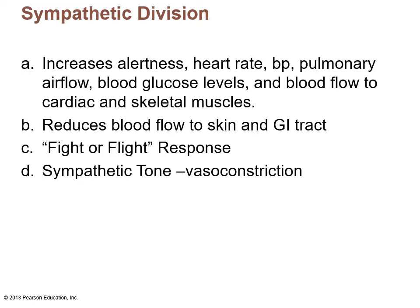The sympathetic division I like to call the E system, because E stands for excitement, emergency, exercise, embarrassment — anything that revs the body up for a situation where you have to increase alertness and prepare for an emergency. It increases alertness, heart rate, blood pressure, blood flow to the pulmonary circulation, blood glucose levels, and blood flow to cardiac and skeletal muscles. It reduces blood flow to the skin and GI tract. It's also called the fight-or-flight response, and the sympathetic tone is vasoconstriction.